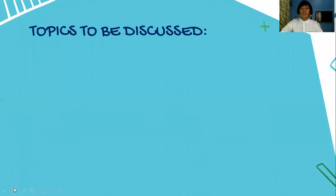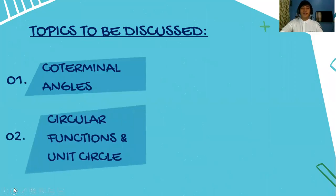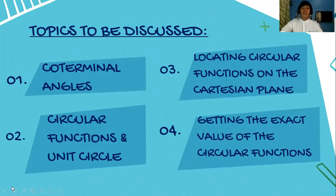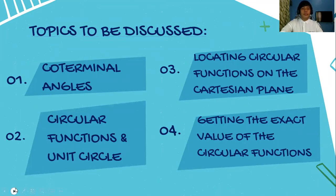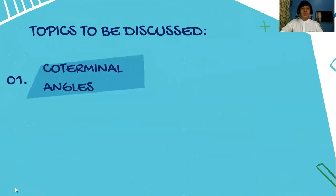Here are the topics that we will be discussing: coterminal angles, circular functions, unit circle, locating circular functions on the Cartesian plane, and getting the exact value of the circular functions. But we will talk first on the first topic. Are you ready? Let's have coterminal angles.